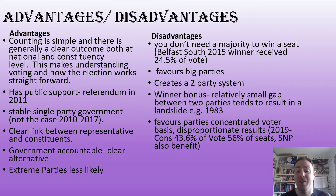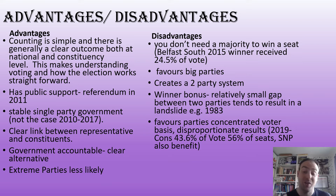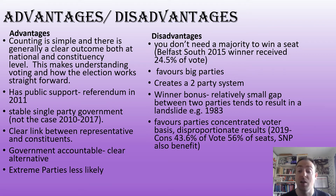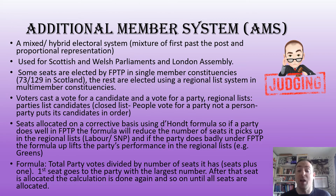FPTP favours parties with concentrated voters. If your support is thinly spread across the country and your party keeps coming second, you end up with very few seats. The Liberal Democrats have suffered from this, and more recently UKIP and the Green Party too. In 2019 the Conservatives received just under 44 percent of the vote but won 56 percent of the seats. The SNP also does massively well out of this system, because they're only competing in Scottish constituencies — their vote is highly concentrated.